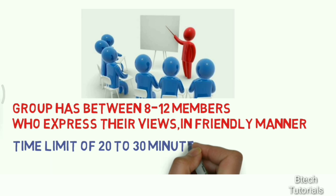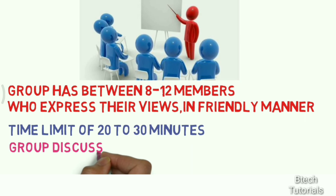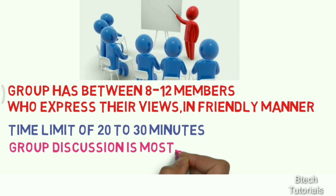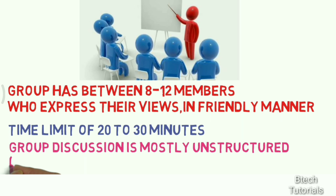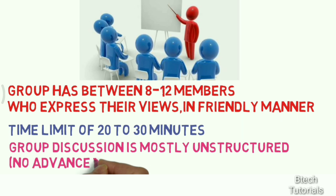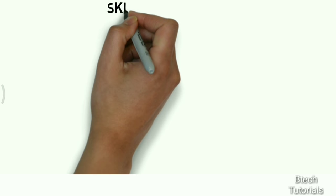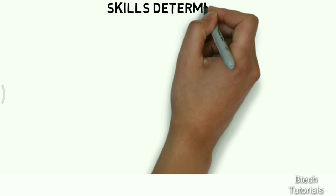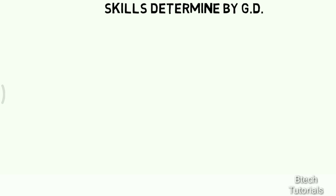The time limit for a group discussion is 20 to 30 minutes, with a maximum of 40 to 45 minutes. Group discussion is mostly an unstructured event — meaning there is no advanced topic given. The topic is given on the spot, and participants must represent their points, views, and knowledge within the given time limit.